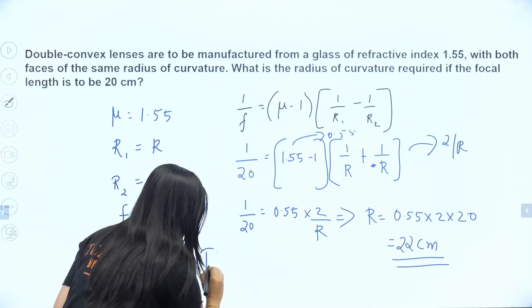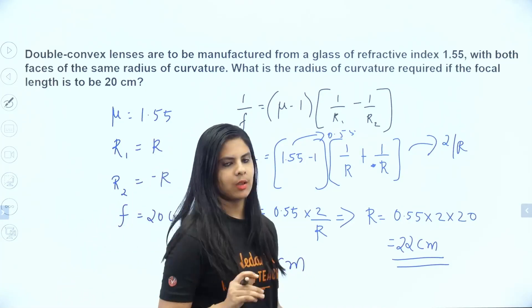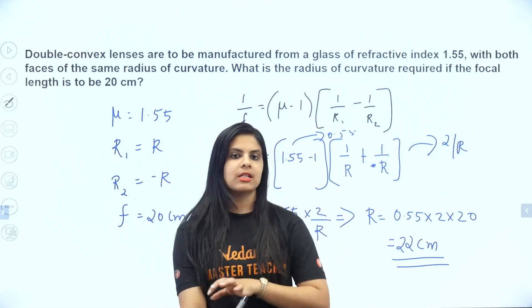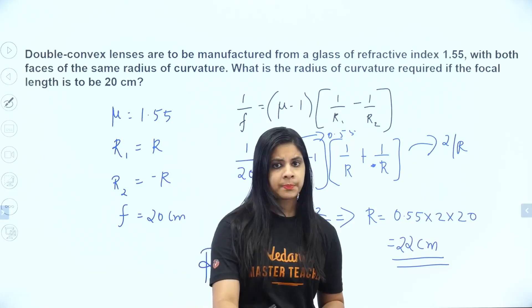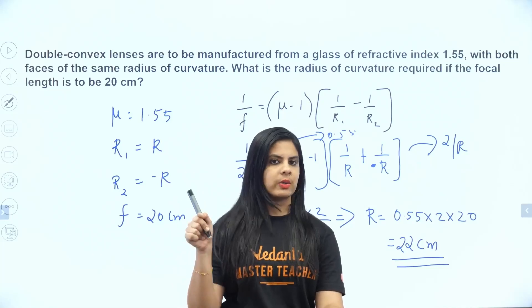The radius of curvature R will be equal to 22 centimeters. This equation substitution is repeated in question papers, especially for CPSC students—it's a repeated problem.